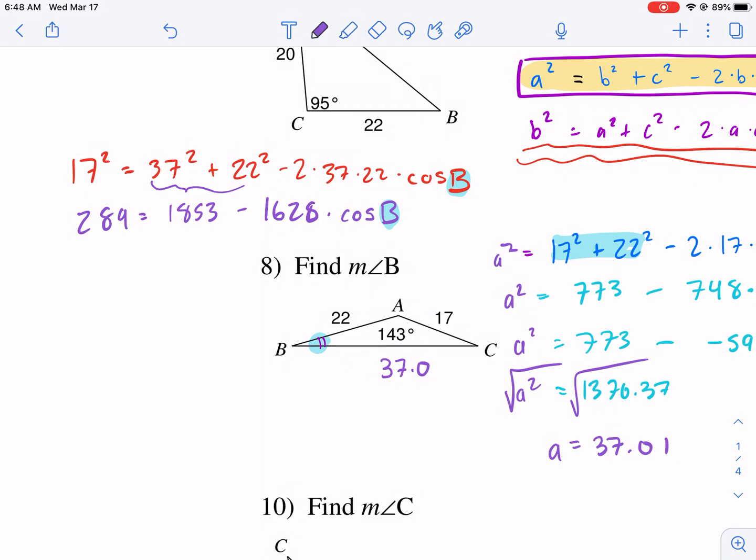What do I do from here? Well, if I'm trying to solve for B, I need to get this stuff over to the other side. So first, I need to subtract 1853 from both sides. 289 minus 1853. I get negative 1564 equals negative 1628 times cosine of B. Again, I'm looking for the angle. So now I need to divide by negative 1628 on both sides. And I get 0.9606 equals cosine of B.